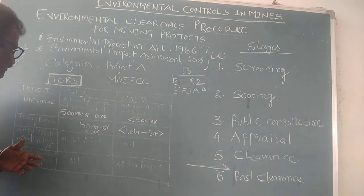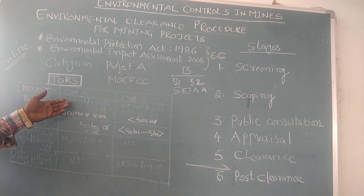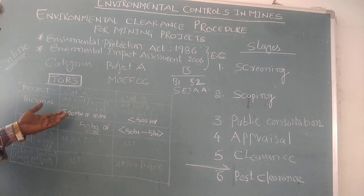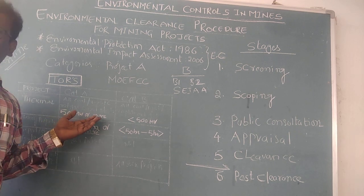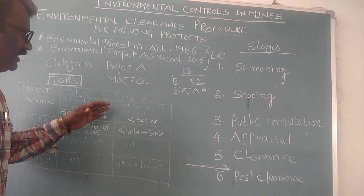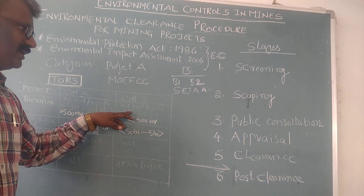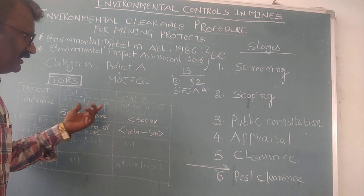Looking at the classification chart: for thermal projects — coal, lignite, and gas-based plants — those with 500 megawatts or more fall under Category A, while plants with less than 500 megawatts fall under Category B.